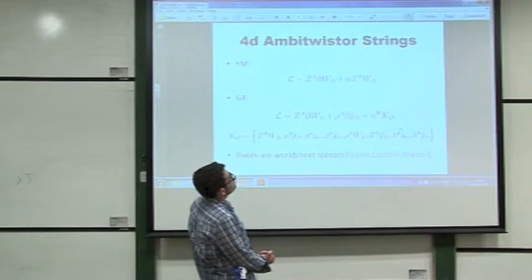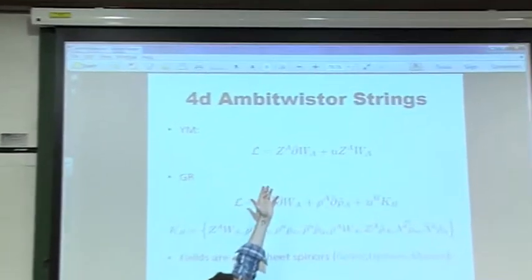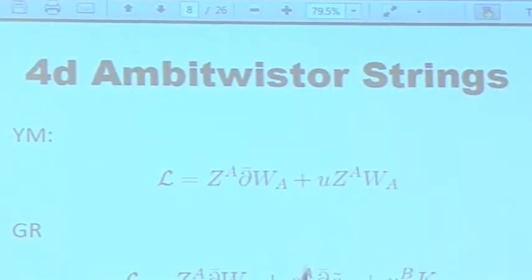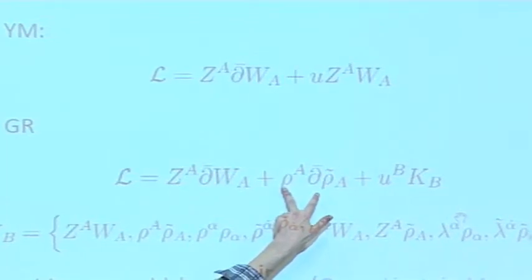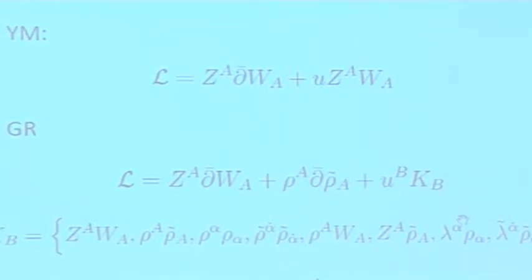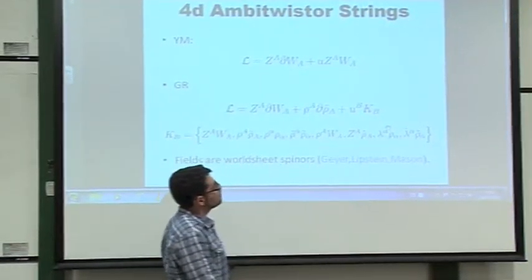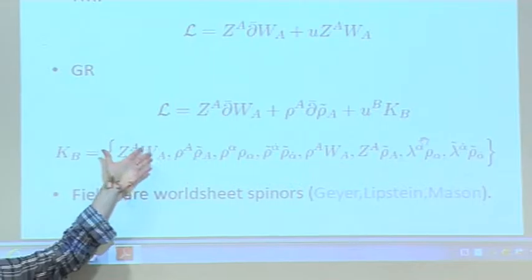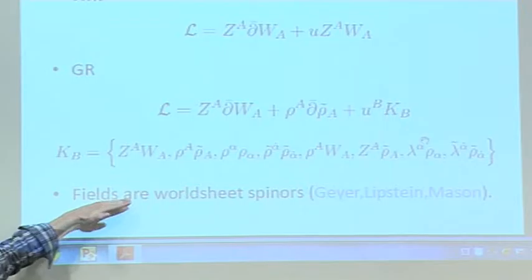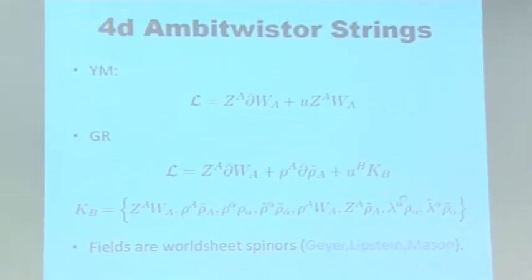For the models that describe Yang-Mills theory, the Lagrangian is just Z d-bar W, plus a constraint imposing Z · W equals zero. For gravity, it's a very similar action except that you also have fermionic degrees of freedom on the worldsheet — rho and rho-tilde — whose purpose is to give rise to determinants, which is the analog of the Parke-Taylor factor in Yang-Mills. One also gauges a set of currents, four bosonic and four fermionic. This model is closely related to the twistor string theories of Berkovits, Witten, and Skinner, but a crucial difference is that one takes the fields in this model to be worldsheet spinors, which leads to various important simplifications.